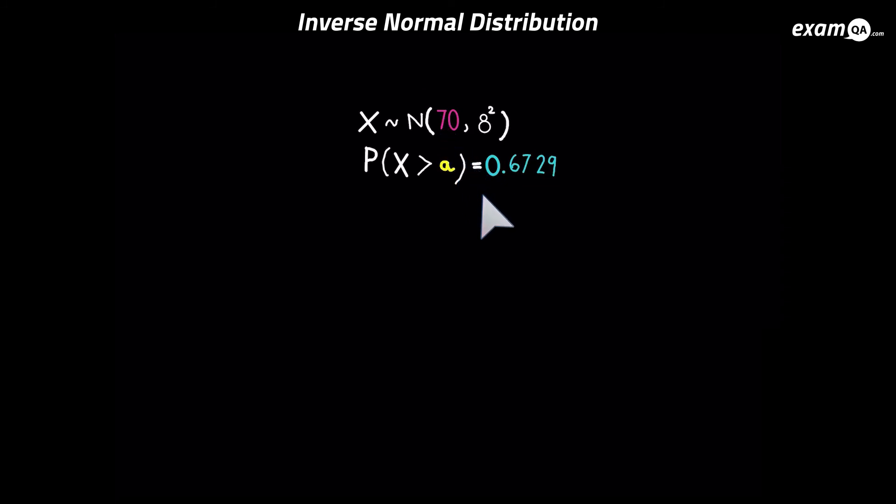Okay, so you should realize it's not how we like it, so we can make a quick change. If the area to the right of a is 0.6729, we can work out the area to the left of a and hopefully got the same value as me: 0.3271. Now we're ready to go. Just start your calculator up and put these values in. We'll do the inverse norm of 0.3271. And we get our answer: 66.4165. And there we have it.